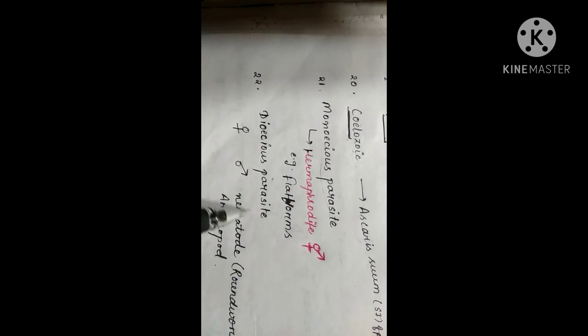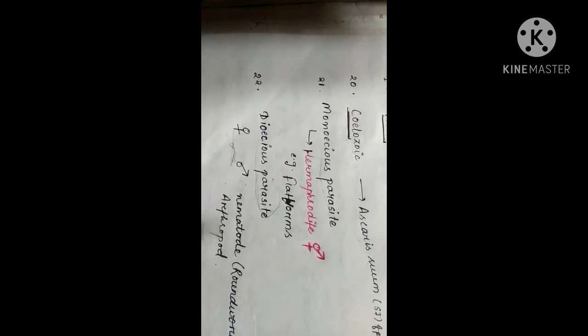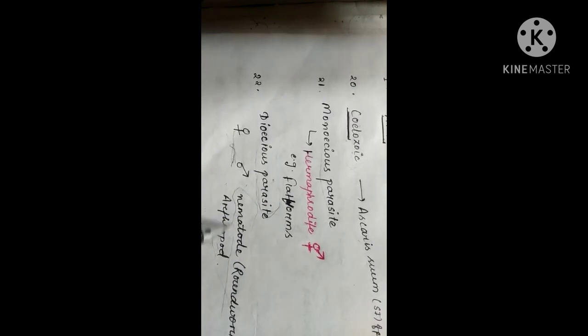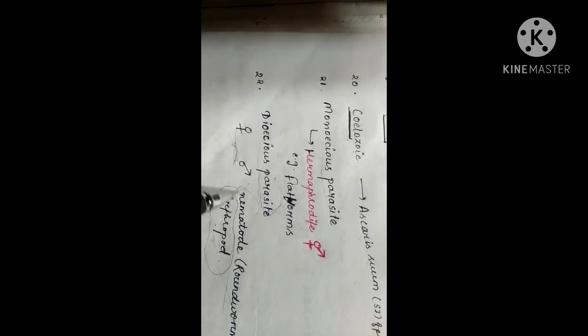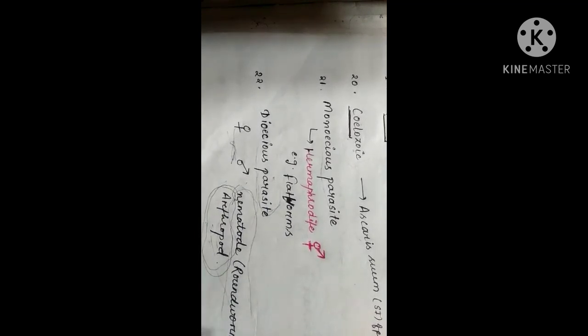The next is dioecious parasite. Dioecious parasites are those parasites in which the male and female reproductive organs are present in two different parasites. For example, nematodes, roundworms, and arthropods — their sexes are differentiated, meaning the female sex organs are present in the female and the male sex organs are present in the male; they are not present in the same individual.